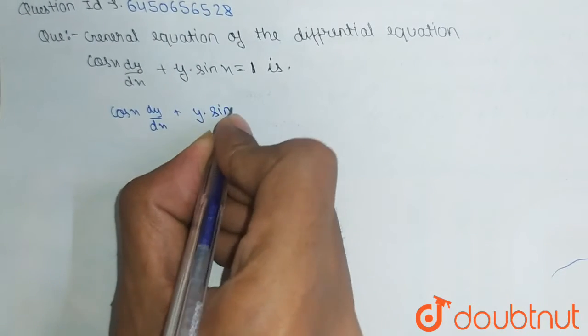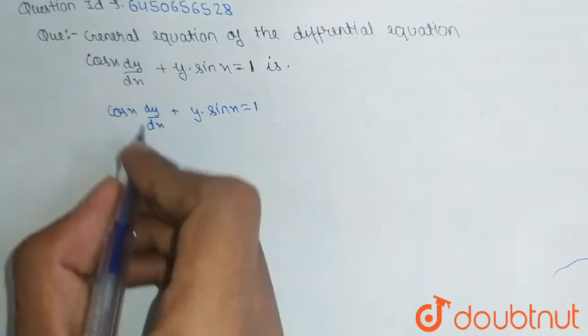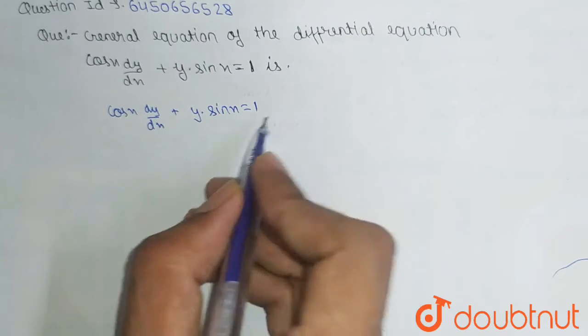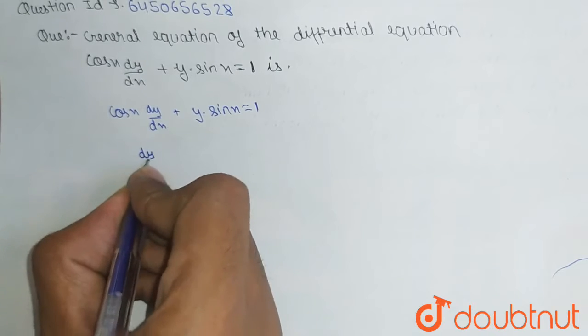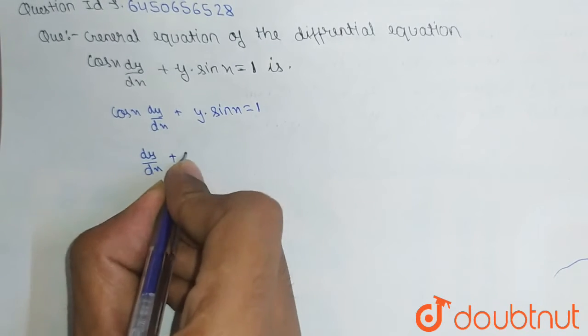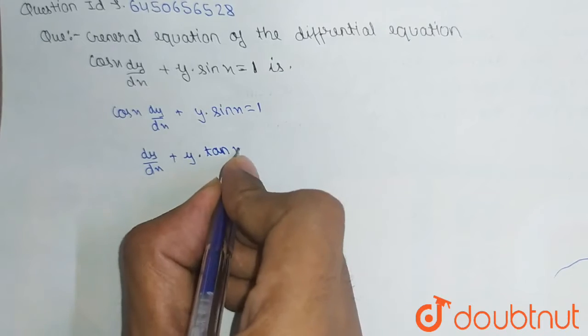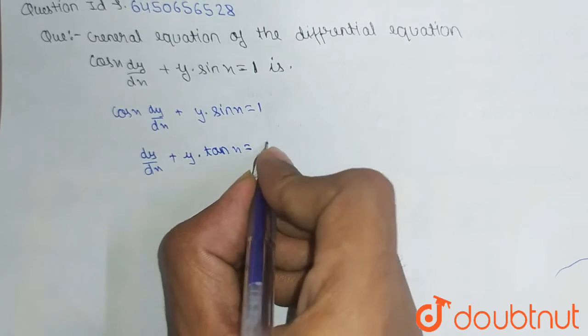Sin x equals 1 and we have to find the general solution. What we have to do is divide the whole equation by cos x. So this will be dy/dx plus y times sin x by cos x, which is tan x, equals 1 by cos x, which is sec x.